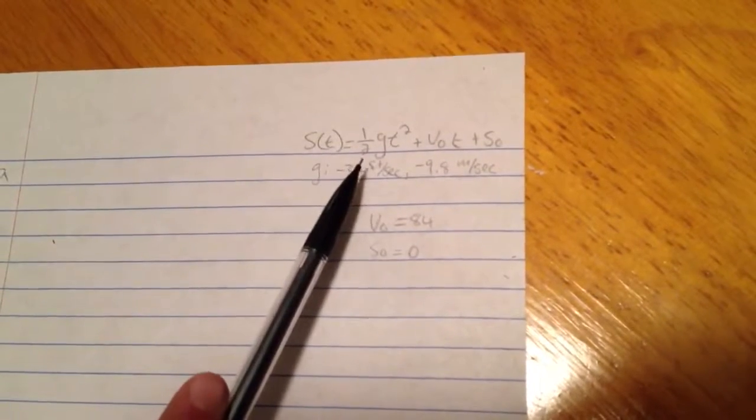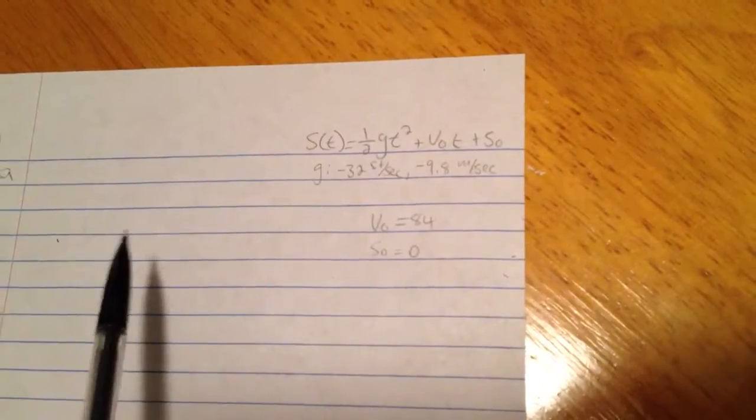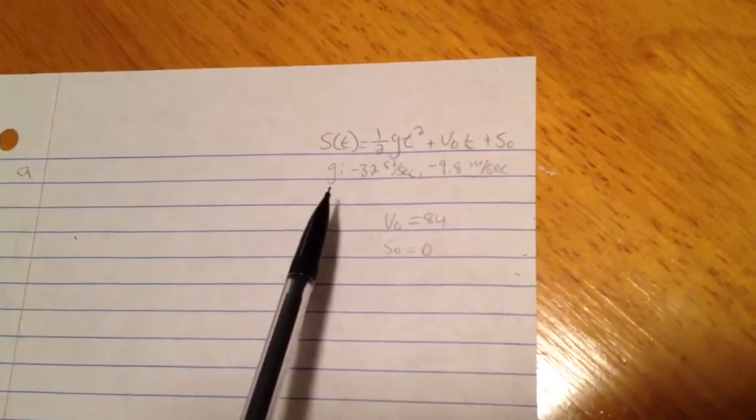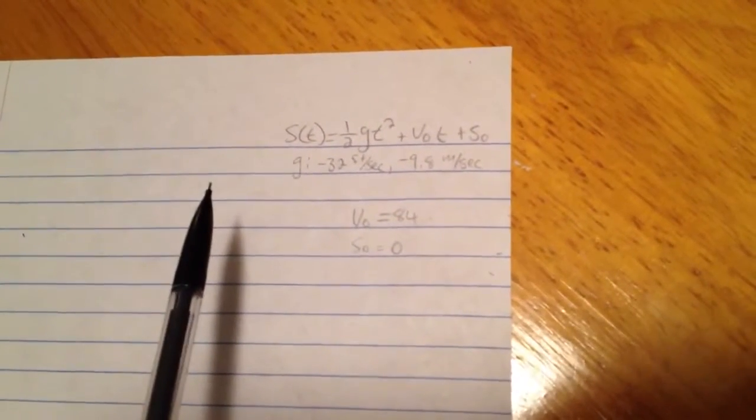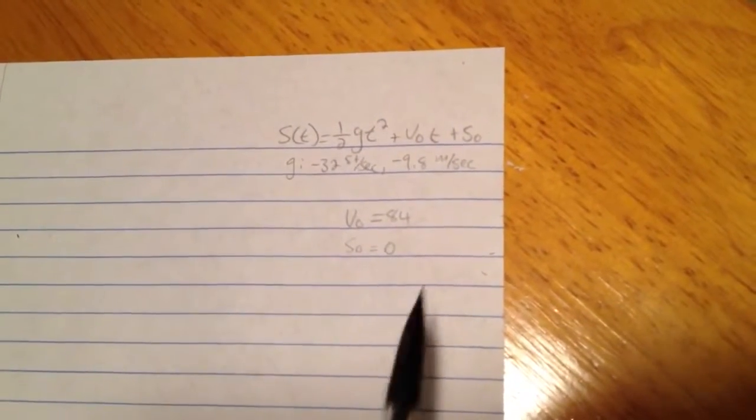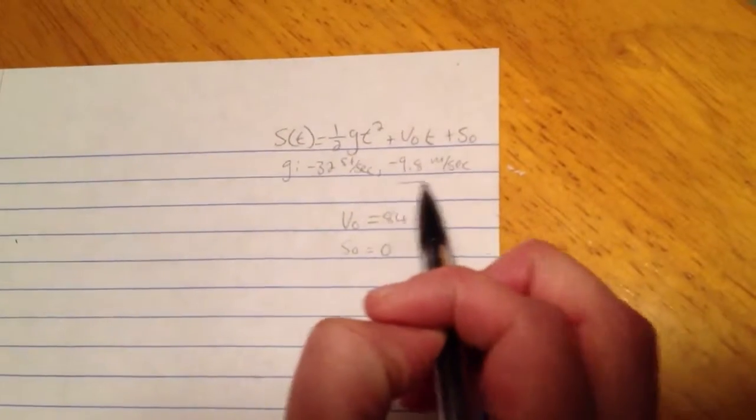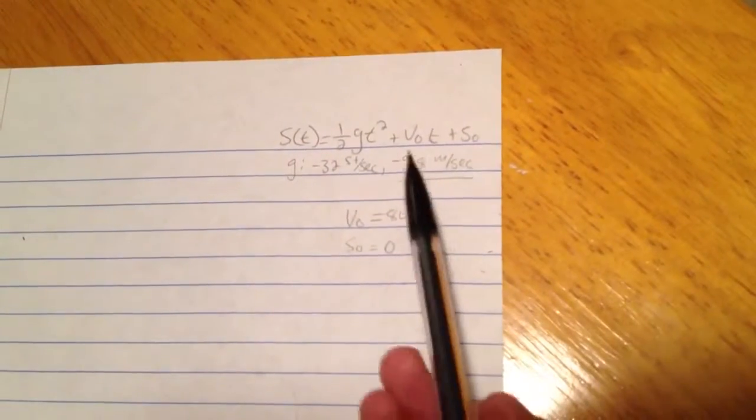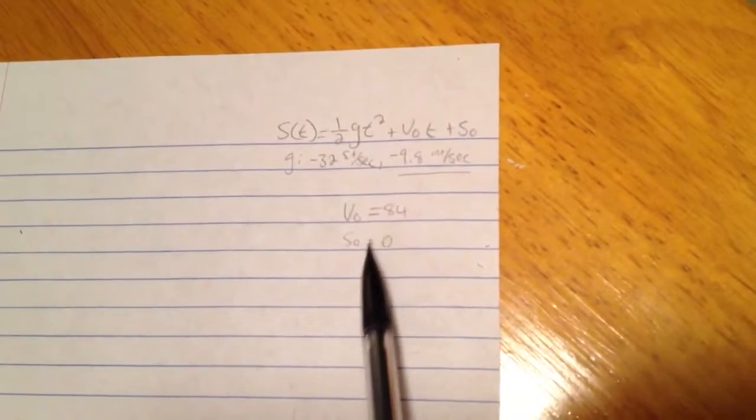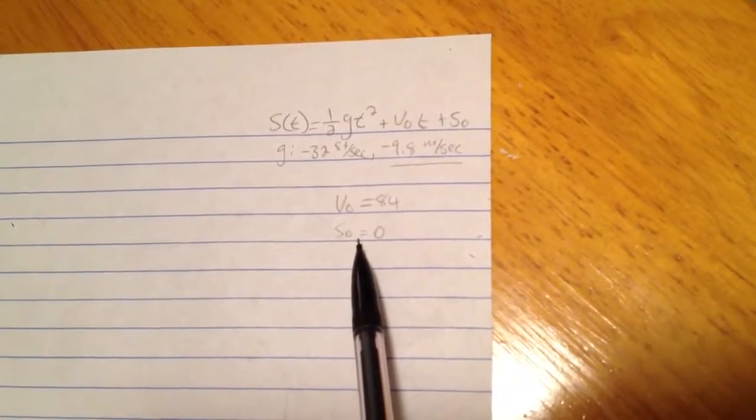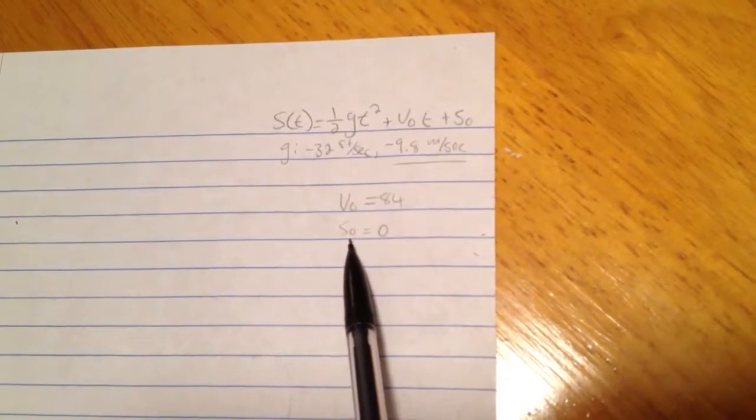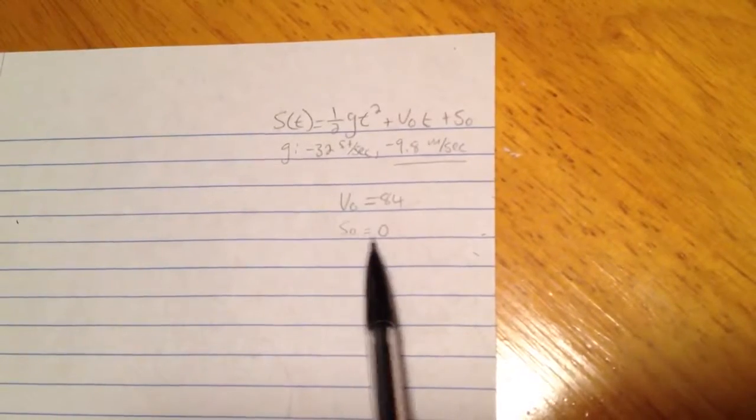So g is just a constant that's given to us, depending on whether we are using feet or meters, which in our case it says meters, so this is the one we're going to be using. And then our initial velocity is 84, and because we weren't given a position from where we started, this is just going to equal zero.